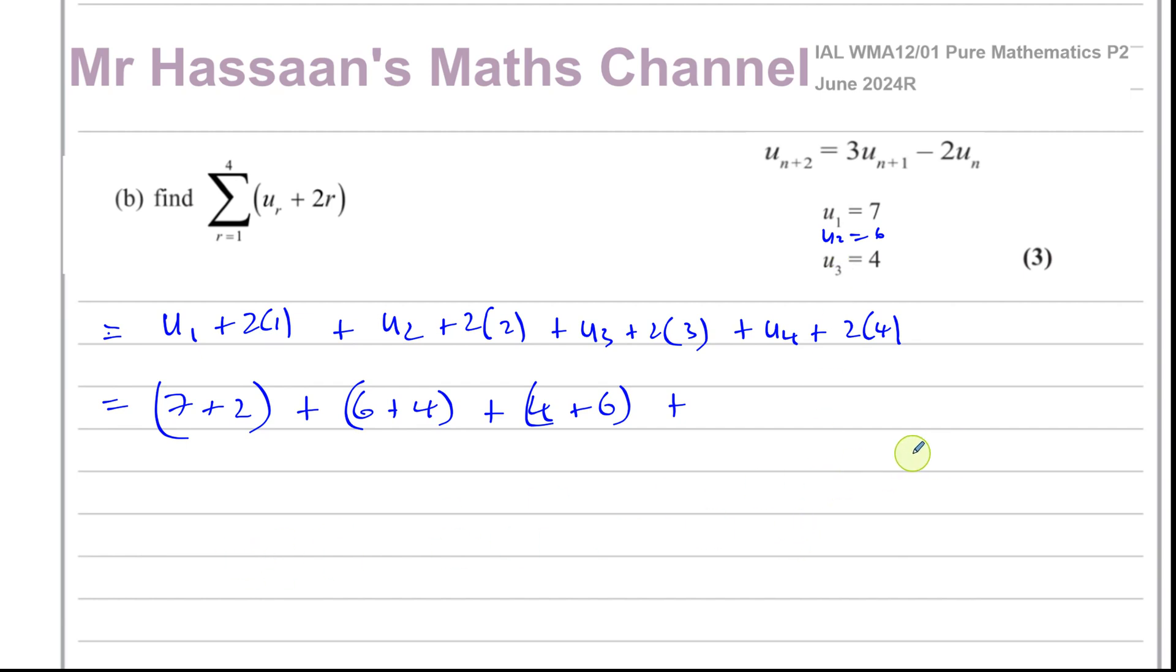So I'll do that on the side here. You can say u₄ is equal to 3 times u₃ minus 2 times u₂. So u₃ is 4, so that's 3 times 4 minus 2 times 6. That's going to be 12 minus 12, which is 0. So u₄ is equal to 0. So this is going to be plus 0 plus 8.